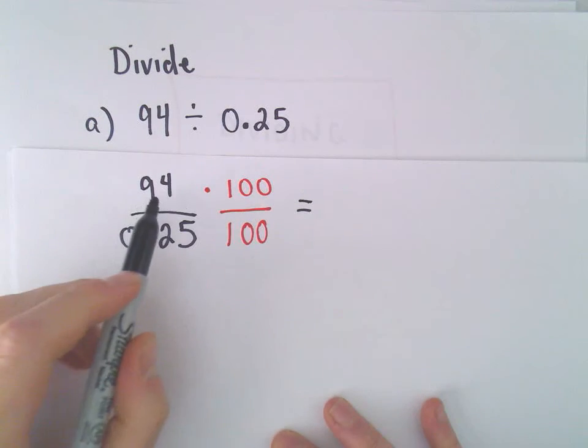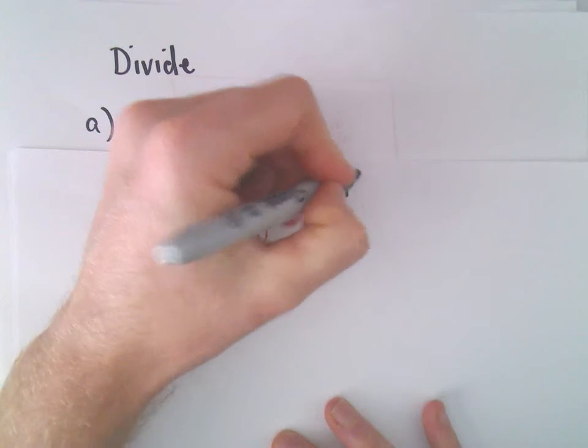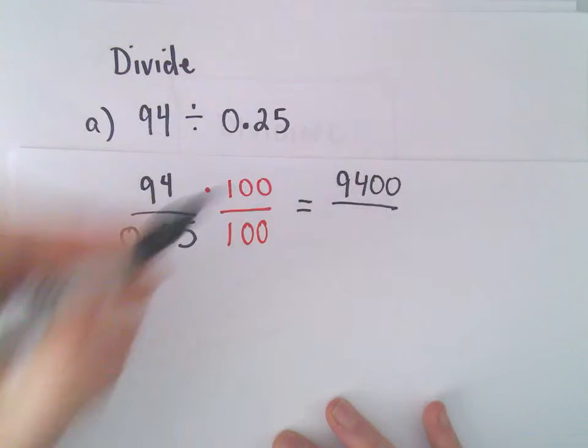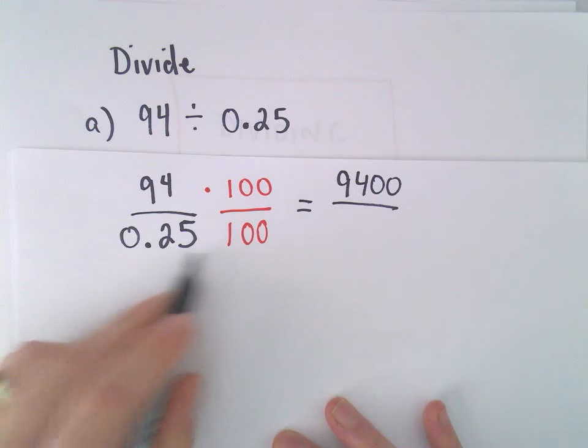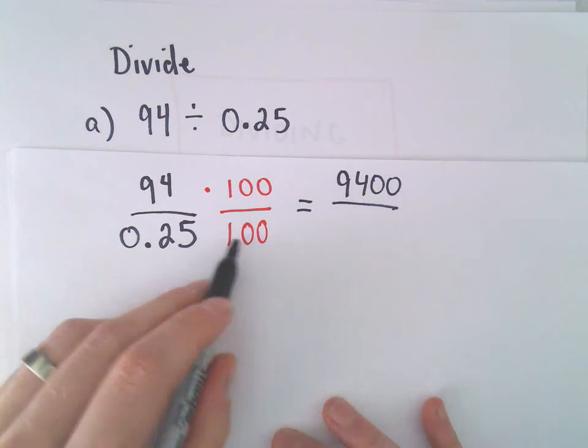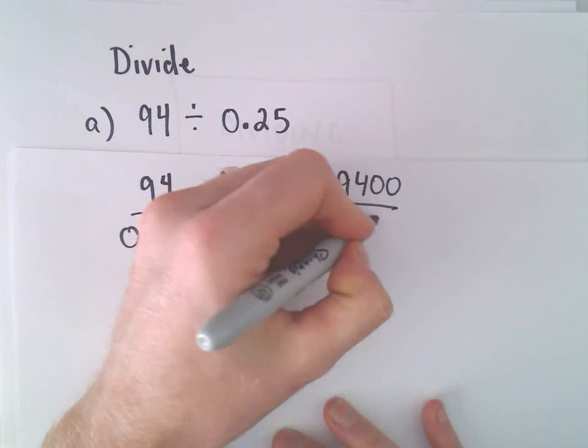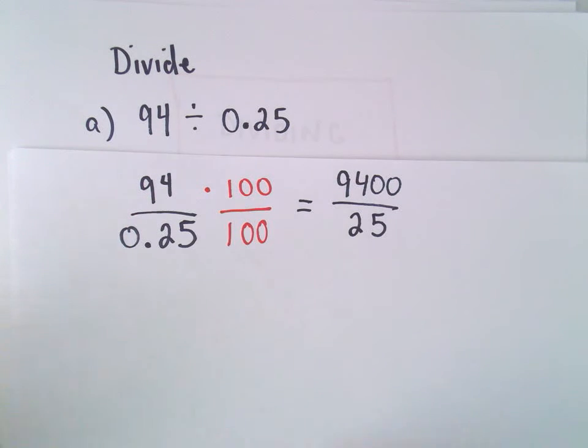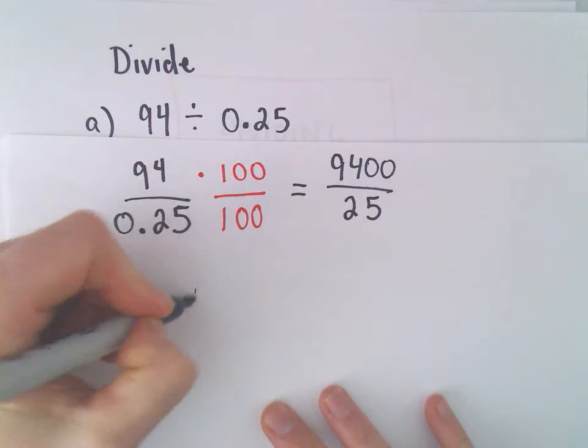When we do our arithmetic, 94 times 100 is 9400. And when we multiply 0.25 by 100, that's just going to move the decimal place two places. So equivalently, we have 9400 divided by 25, and now I'm just going to do my old long division.